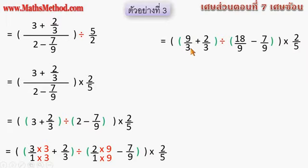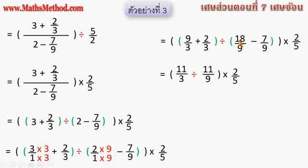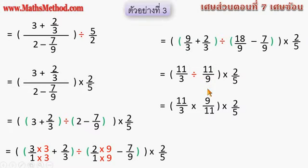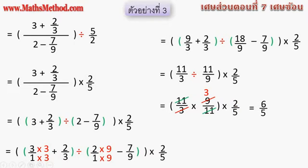ตัวตั้งมีส่วนเป็น 3 เท่ากับตัวบวก บวกเรียบนี้ก็เหมือนกัน คูณ 100% และส่วนด้วย 9 จะทำให้ตัวตั้งมีส่วนเป็น 9 เท่ากับส่วนของตัวลบ จึงลบกันได้ 9 บวก 2 ได้ 11; 18-7 ก็ได้ 11 เหมือนกัน ใช้วิธีเปลี่ยนหารเป็นคูณกับเศษเป็นส่วน หารด้วย 11 ส่วน 9 เปลี่ยนเป็นคูณด้วย 9 ส่วน 11 สามจำนวนคูณกัน จึงสามารถทอนตัวเลขให้น้อยลง 11 กับ 11 ทอนกันหมดไป เหลือ 3×2 ได้ 6 และ 16 ส่วน 5 ซึ่งเป็นเศษเกิน